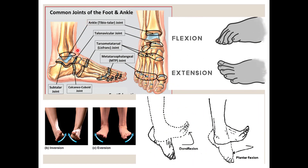There are several joints in the foot. The ankle joint is formed by the tibia, fibula, and talus bone, and is also called the tibiotalar joint. Then there is the talonavicular joint where the talus articulates with the navicular bone. There is the tarsometatarsal joint between the tarsal and metatarsal bones, and the metatarsophalangeal joints between the metatarsals and phalanges. There is also the subtalar joint — below the talus — and the calcaneocuboid joint between the calcaneum and the cuboid bone.